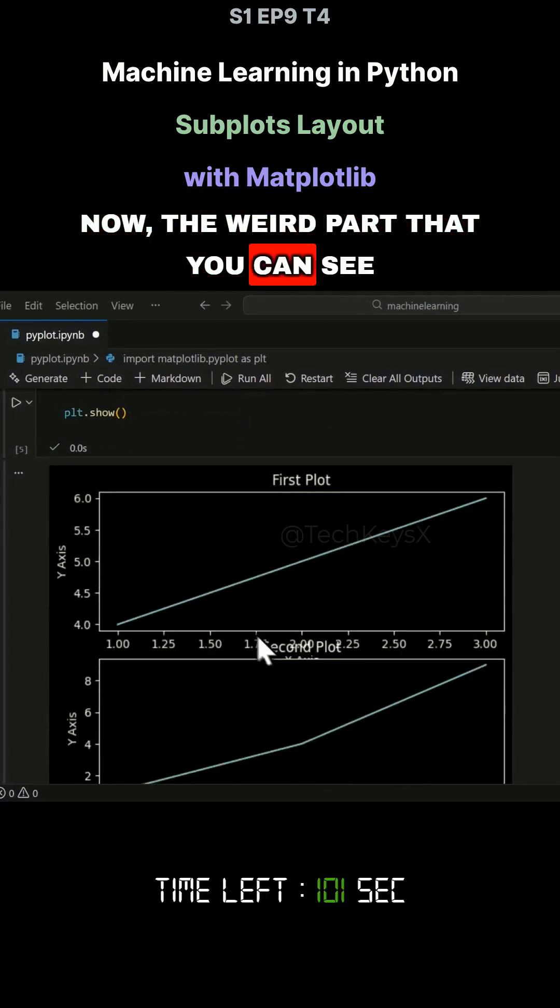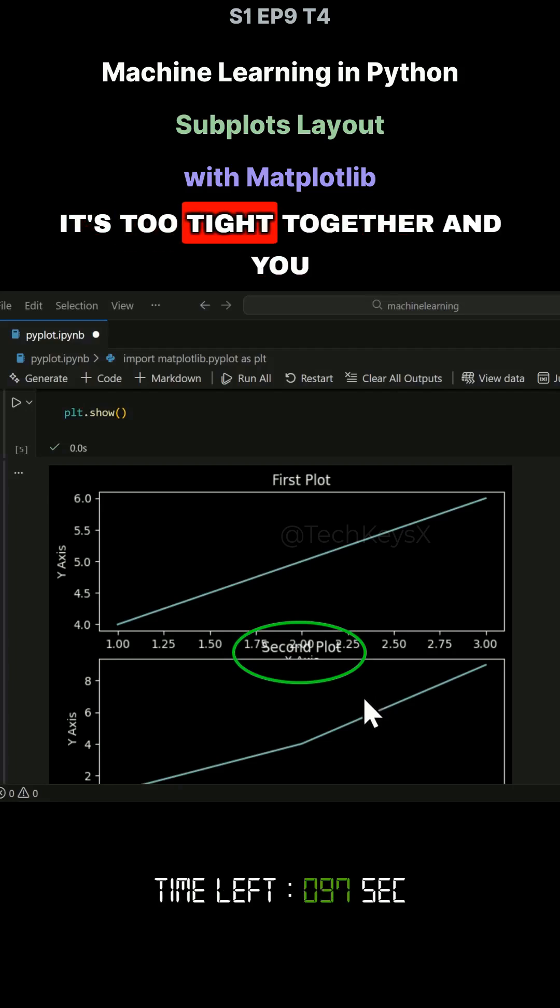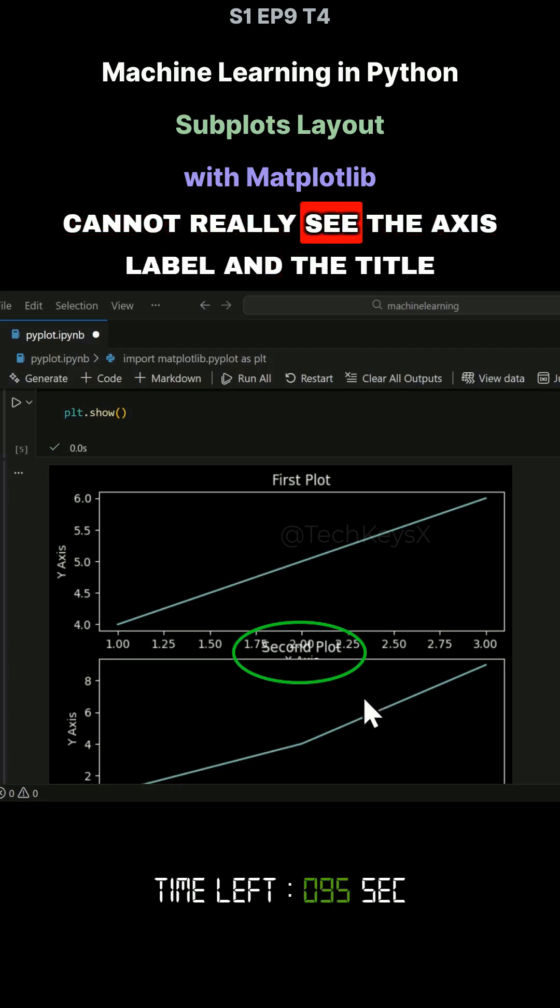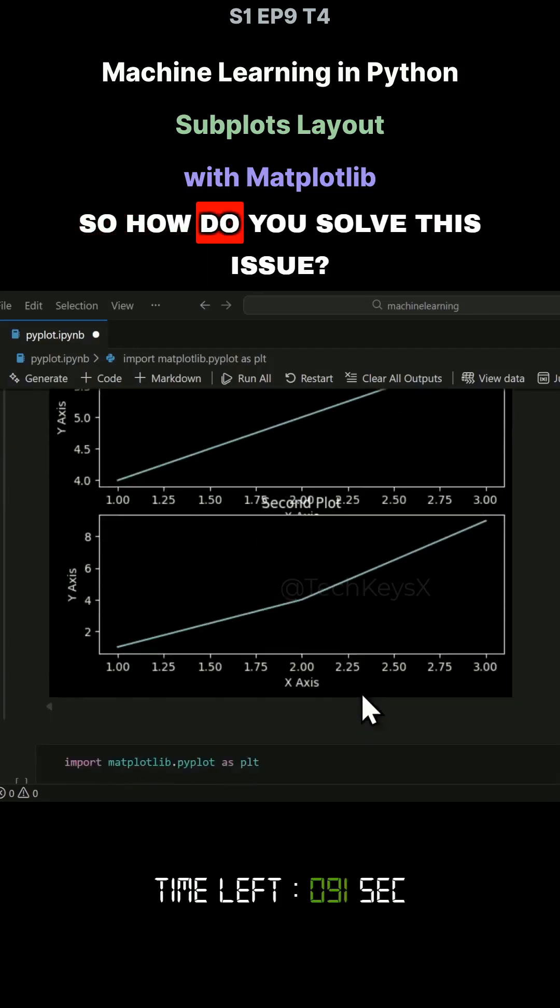Now, the weird part you can see over here is that the heading is crushed. It's too tight together and you cannot really see the axis label and the title. They are overlapping each other. So how do you solve this issue?